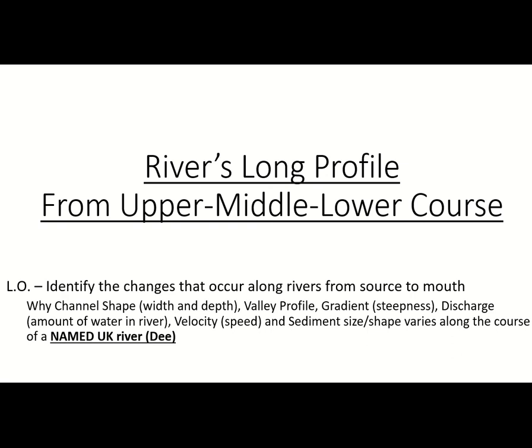We're going to look at the River Dee as a named case study to help you exemplify in an exam. What we mean when we talk about the river's long profile is the river's overall shape. You can simplify a cross-section into three main areas along a river's course from source to mouth. The first section from its source is what we call the upper course, the middle part is the middle course, and the bit closest to sea level is called the lower course.